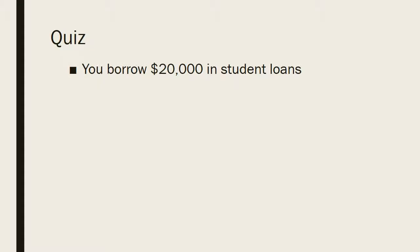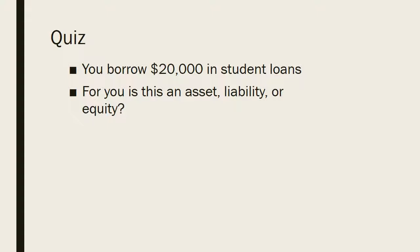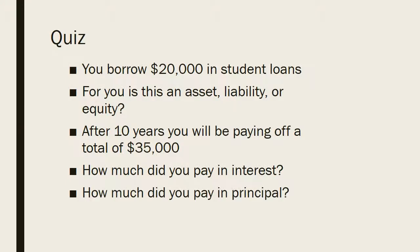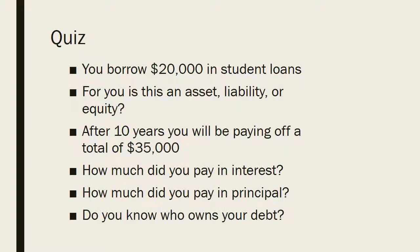Let's do a quick quiz. Let's say you borrowed $20,000 in the form of student loans. For you, is this an asset, liability, or equity? And after 10 years, you'll have paid off a total of $35,000 — how much did you pay in interest, and how much in principal? The answer: the $20,000 is a liability. You paid $15,000 in interest and $20,000 in principal. In the United States, who probably owns your student loan debt? That's probably the United States government — so please pay it back.